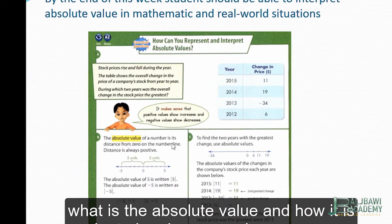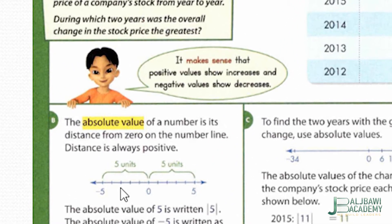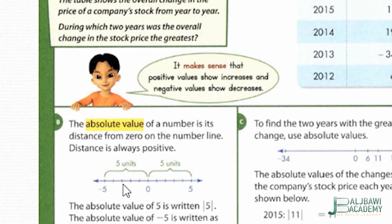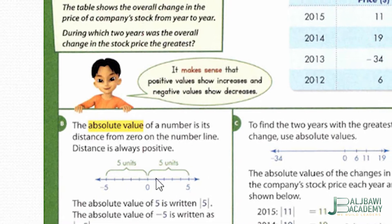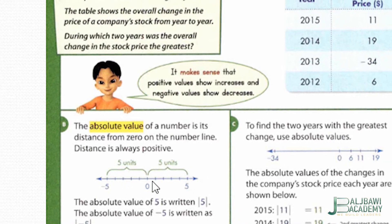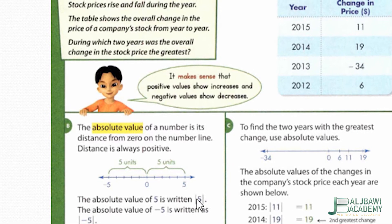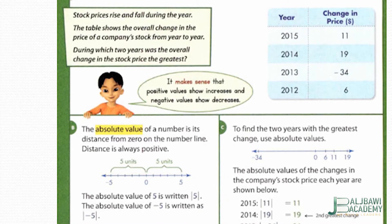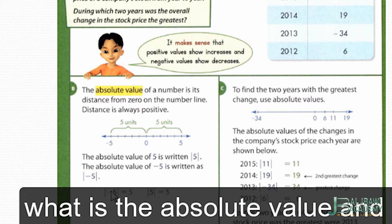The absolute value of a number is its distance from zero on the number line. Distance is always positive, so even if the number is negative, the distance from zero will be positive. For example, 5 and negative 5 have the same distance from zero, so they have the same absolute value, which is 5.